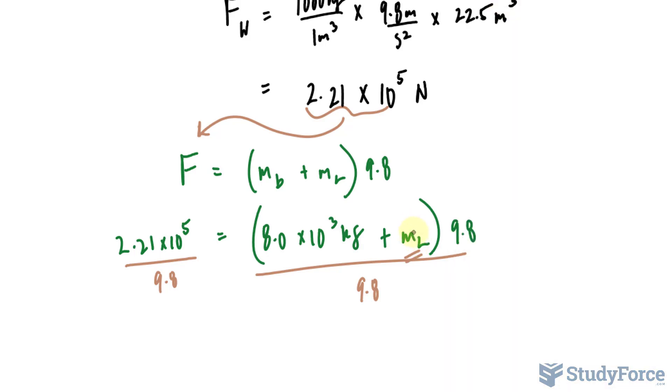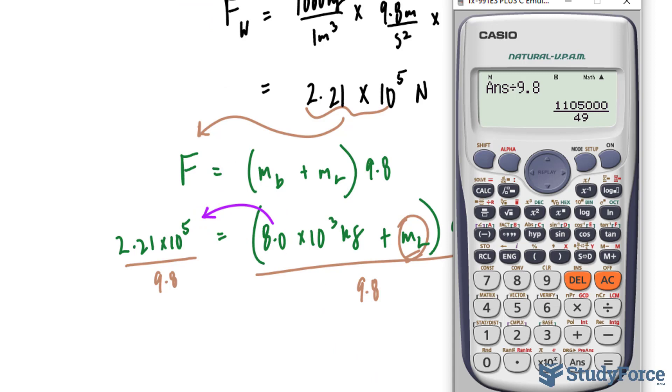And to solve for this, I have to bring this term over to that side. So it becomes negative, or the number on our screen, minus 8,000.